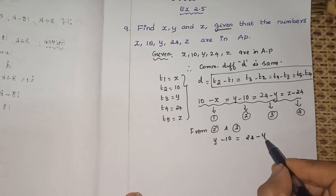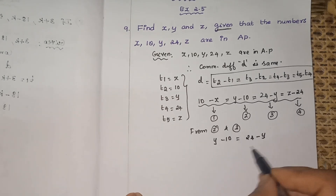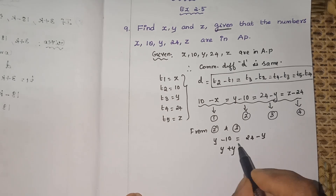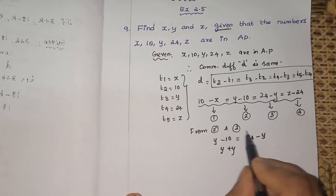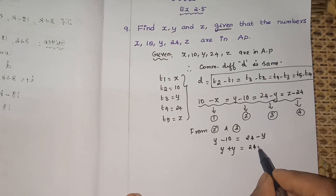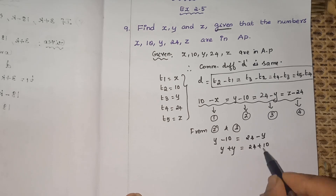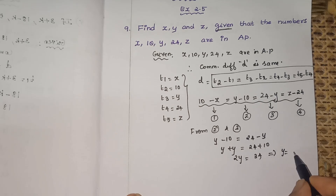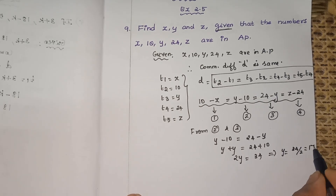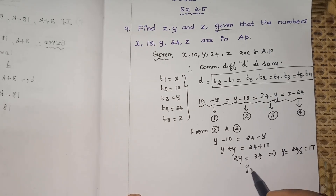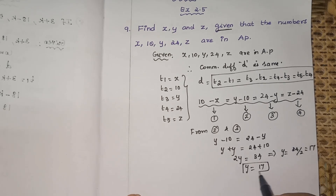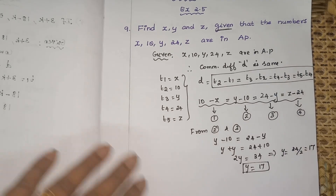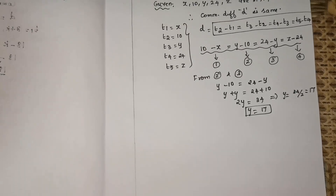Bringing y to one side: y plus y equals 24 plus 10, so 2y equals 34, giving y equals 17. We now have the value of y.